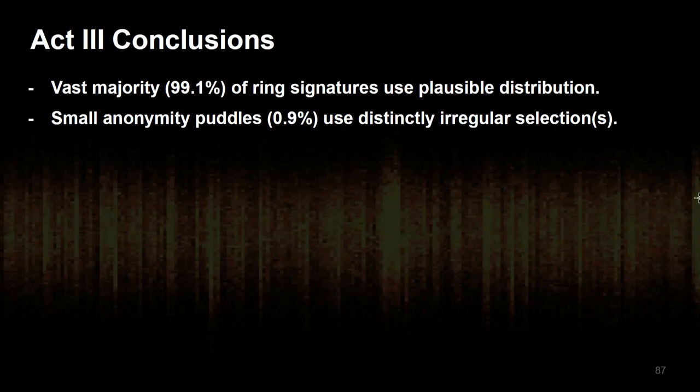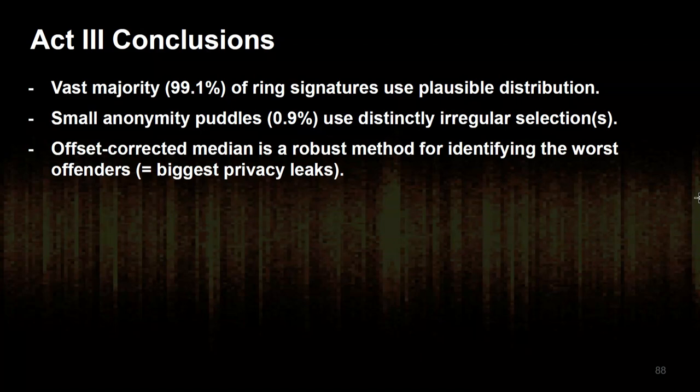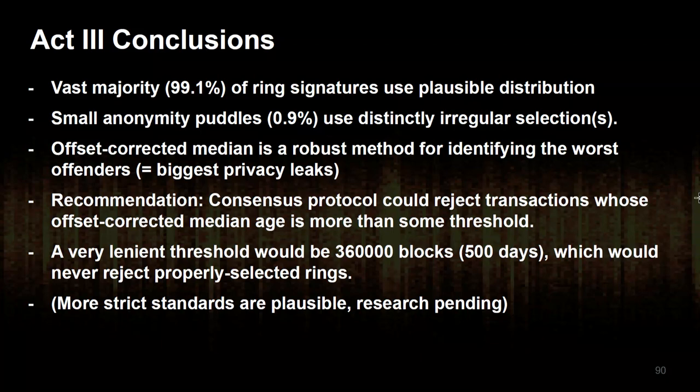Conclusions from Act 3: the vast majority are using a plausible distribution. Small anonymity puddles use distinctly irregular selection — often uniform, but there could be other wonky things going on. The offset-corrected median is a robust method for identifying the worst offenders, which are the biggest privacy leaks. My recommendation is that the consensus protocol could reject transactions whose offset-corrected median age is more than some threshold — a very lenient threshold would be about 500 days, which is so absurd it would never reject a properly constructed ring. We could plausibly put a stricter standard, but parameter selection is a conversation for the upcoming weeks and months.